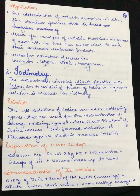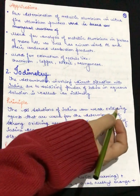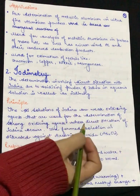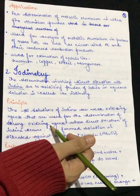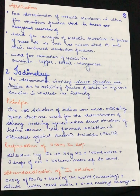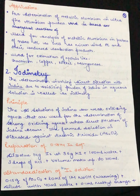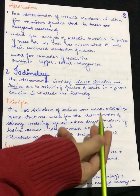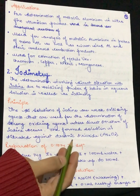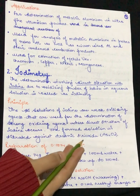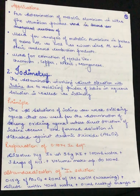The principle behind iodimetry involves solutions of iodine, which are weak oxidizing agents used for the determination of strong oxidizing agents. Iodine itself works as a weak oxidizing agent, and we will be using it for the determination of strong oxidizing agents, where direct titration of iodine occurs. The iodine solution is titrated against arsenic trioxide.